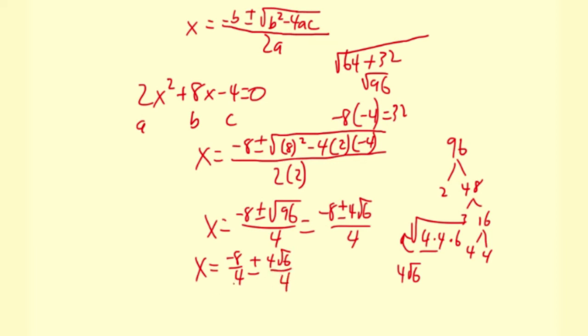Negative 8 divided by 4 is negative 2 plus or minus. And the 4s here cancel out. So it's times 4 divided by 4 and then just square root of 6. So x equals negative 2 plus or minus square root of 6. Those are your two solutions for that quadratic equation.